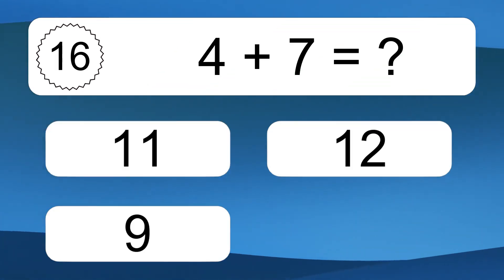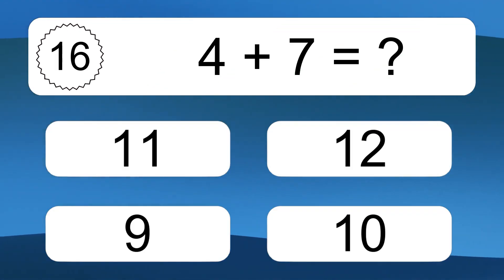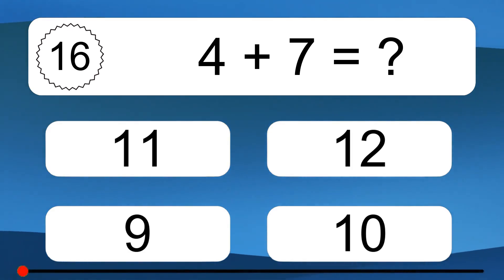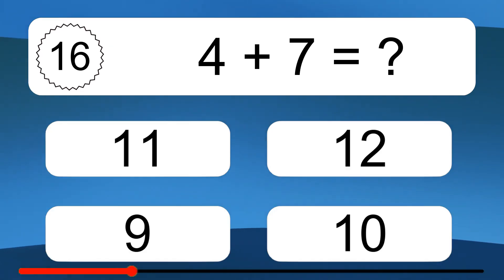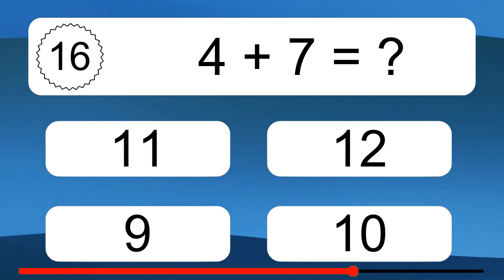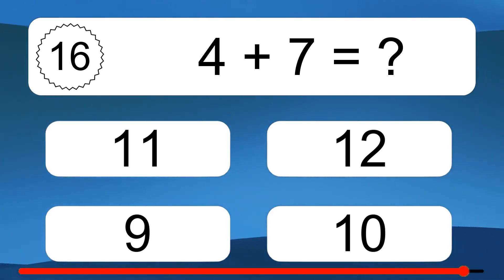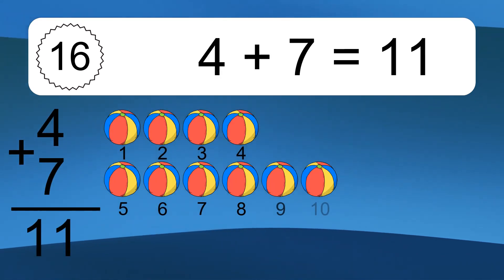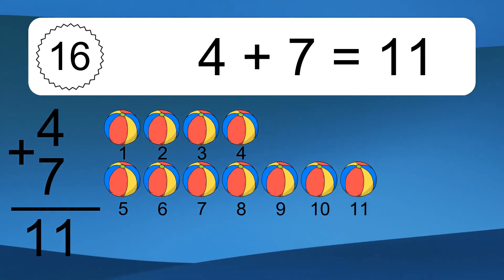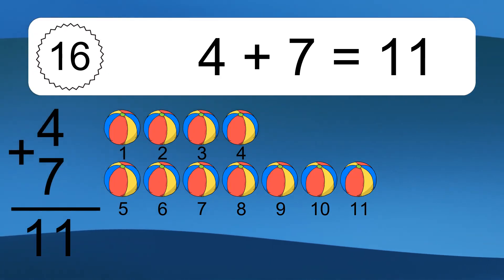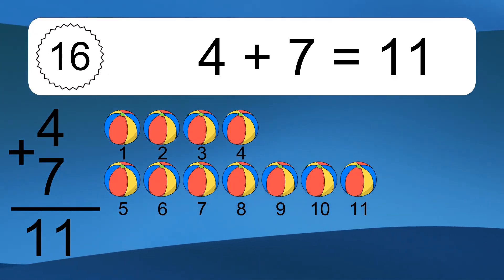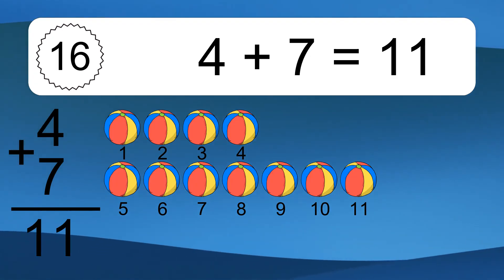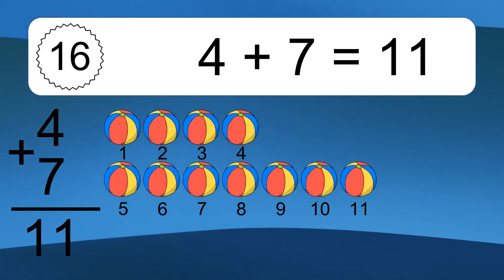4 plus 7 equals what? 4 plus 7 equals 11. Let's count it: 1, 2, 3, 4, 5, 6, 7, 8, 9, 10, 11.